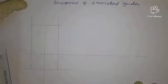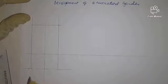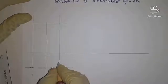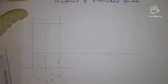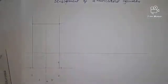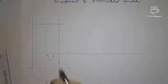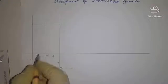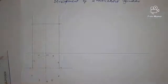We project those points vertically upwards and name them: one, two, three, four, five, six, seven, eight. We make sure to mark all points — nine, ten, eleven, twelve — such that each point can be projected upwards to meet our front elevation.